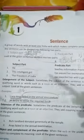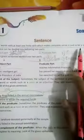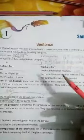So what did we tell you? A group of words which has at least one finite verb which makes complete sense is said to be a sentence. Or we have understood its characteristics.